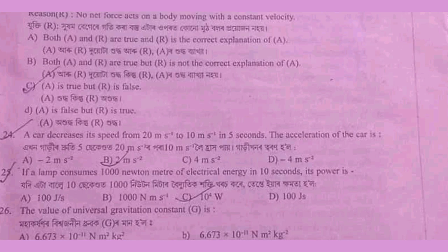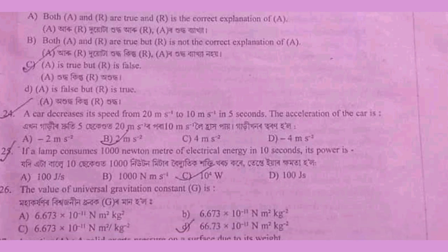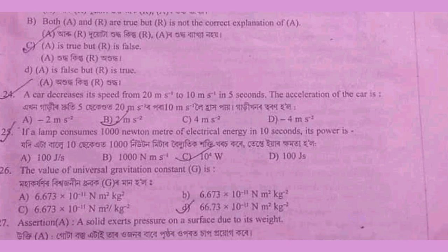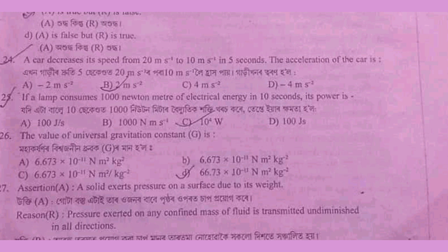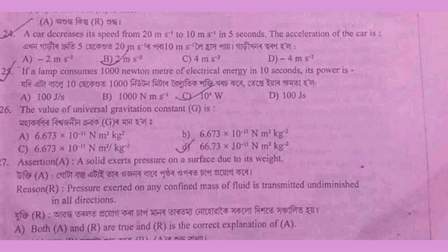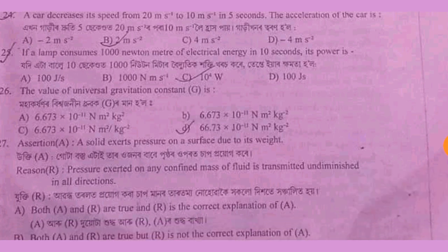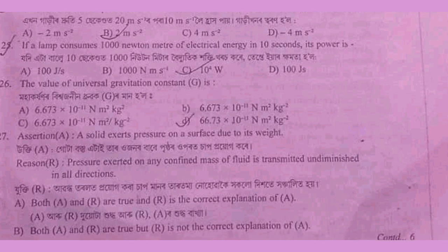If the car decreases its speed from 20 meters per second to 10 meters per second in 5 seconds, the acceleration of the car is calculated accordingly. If a lamp consumes 1000 Nm of electrical energy in 10 seconds, its power is 100 J per second.